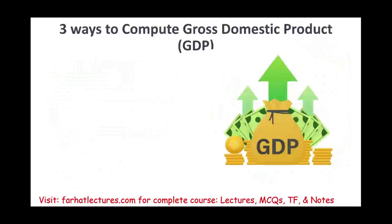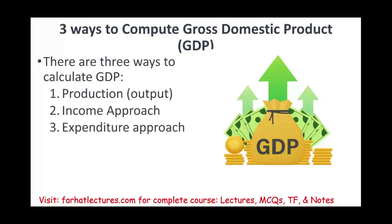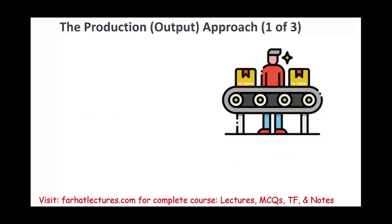There are three ways to compute GDP — gross domestic product — and we're going to do this in a simple way. The three ways are: the production method, also called the production approach or output approach; the income approach; and the expenditure approach. Bear in mind, this is not an econ course — I'm teaching this for accounting students. All that needs to be done is to understand how each approach works.